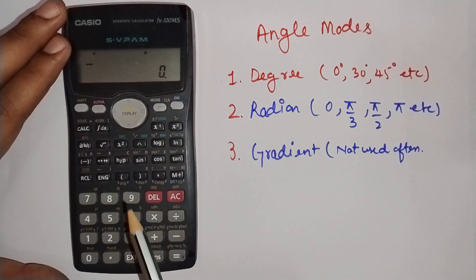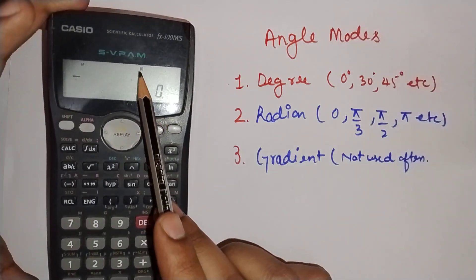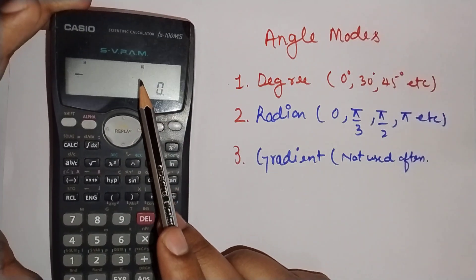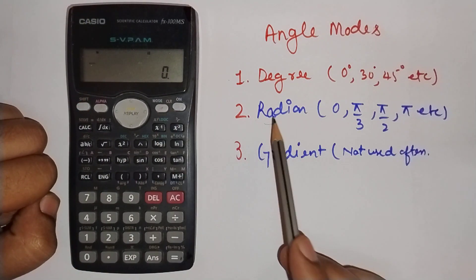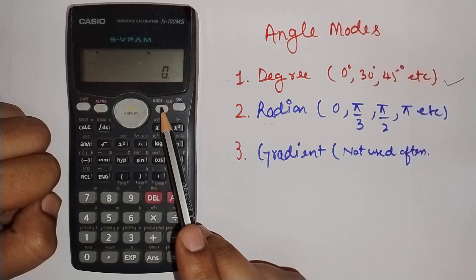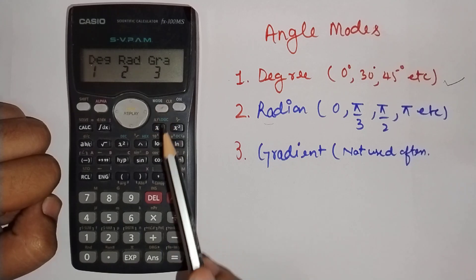You can see a small 'd' on the screen, which means the calculator is now working in degree mode. To move to radian mode, press mode, mode again, then press 2.